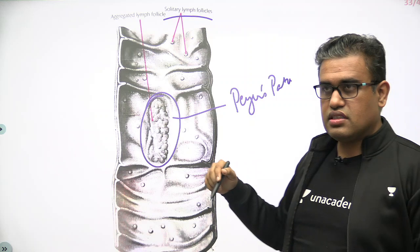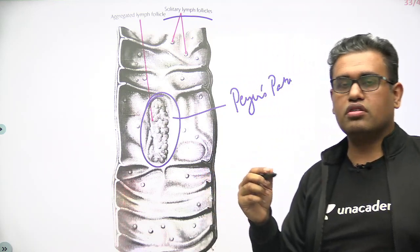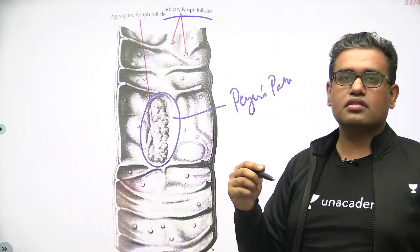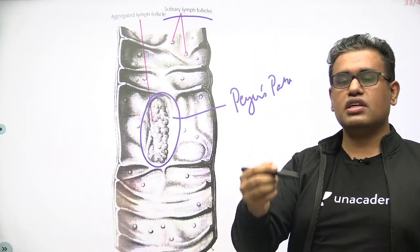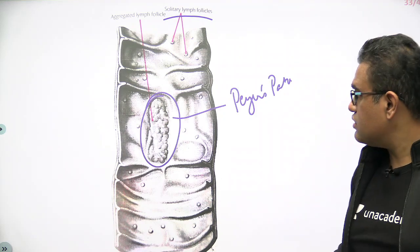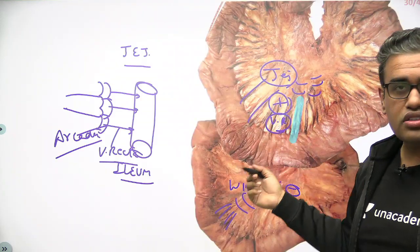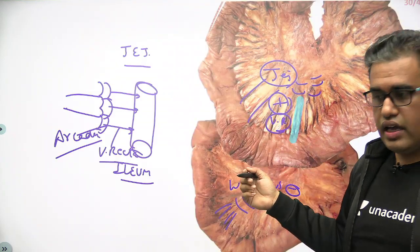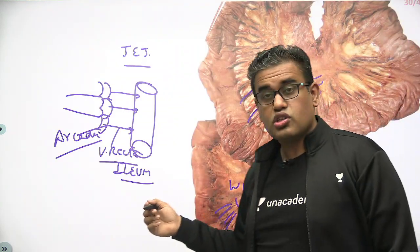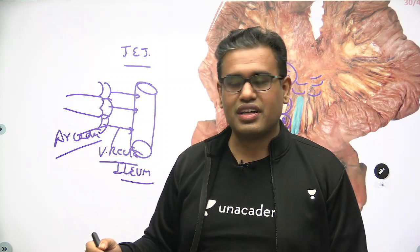In summary: on barium, Jejunum shows a feathery appearance compared to a featureless Ileum. These are the key differences between Jejunum and Ileum. I hope you enjoyed it — thank you for your time.